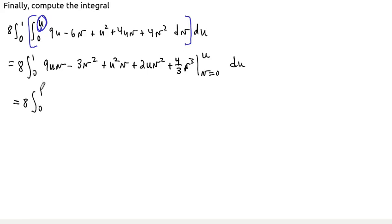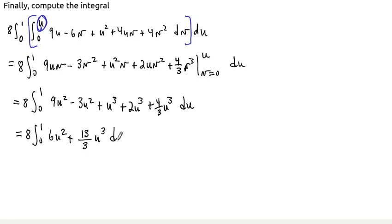And now we plug in our boundaries of v equals 0 and u before we do the next integral. So when all the v's become 0, it zeroes out all those terms. When the v's become u's, they become u's. So this is now 9u squared minus 3u squared, plus u cubed, plus 2u cubed, plus 4/3 u cubed du. And of course it makes sense now to combine all the different powers. So total here we have 6u squared, plus we're going to have, what is this, 13/3 u cubed du.